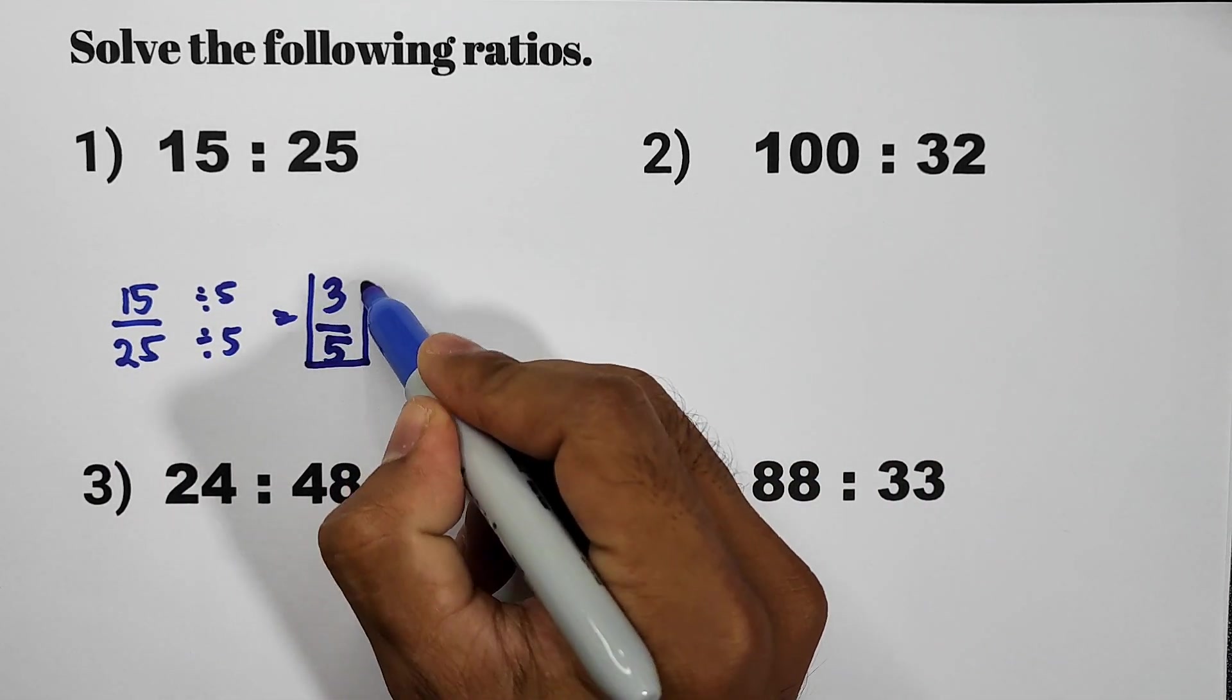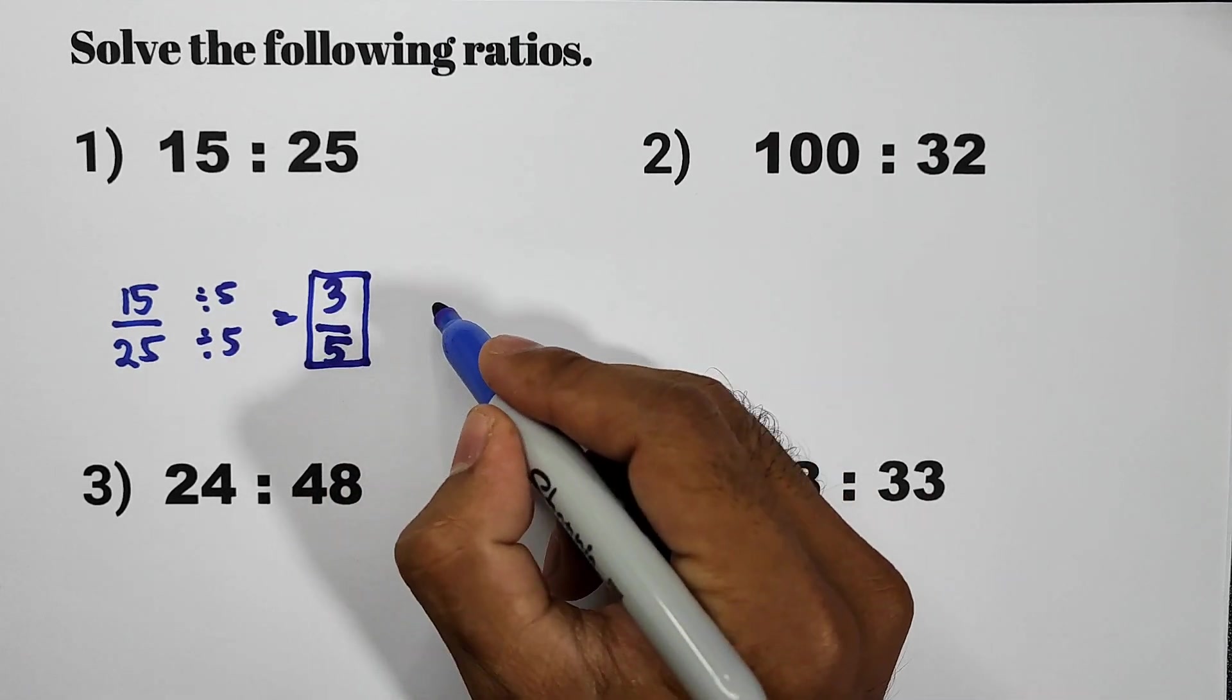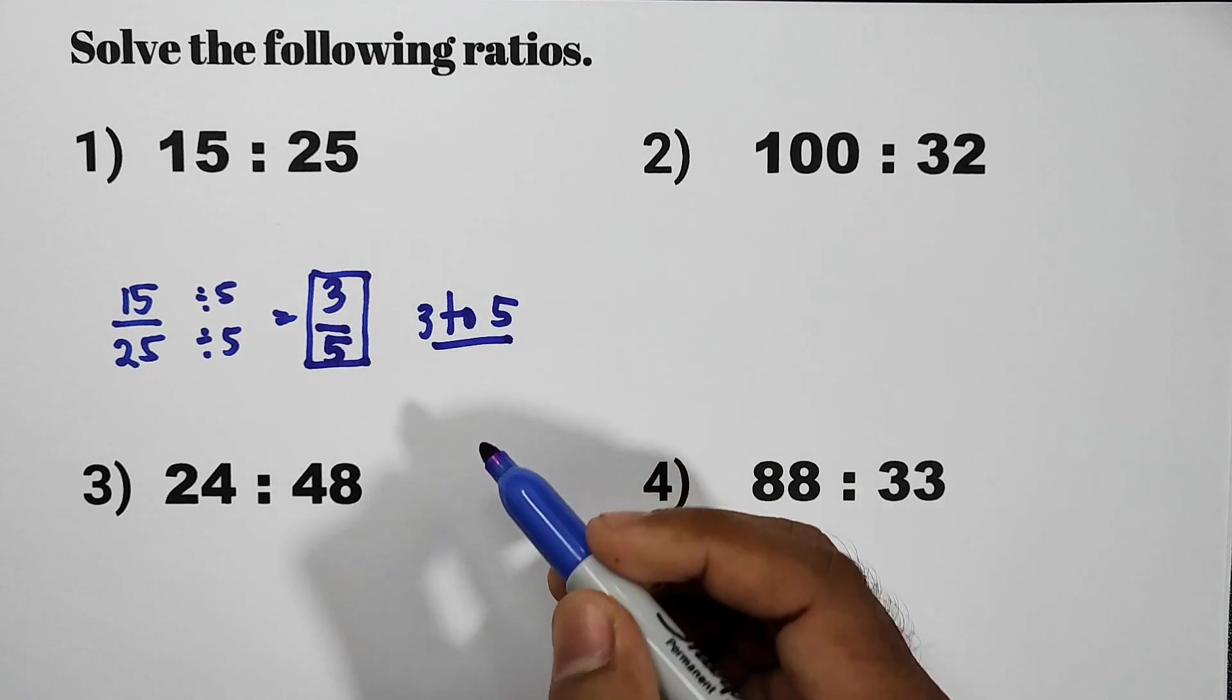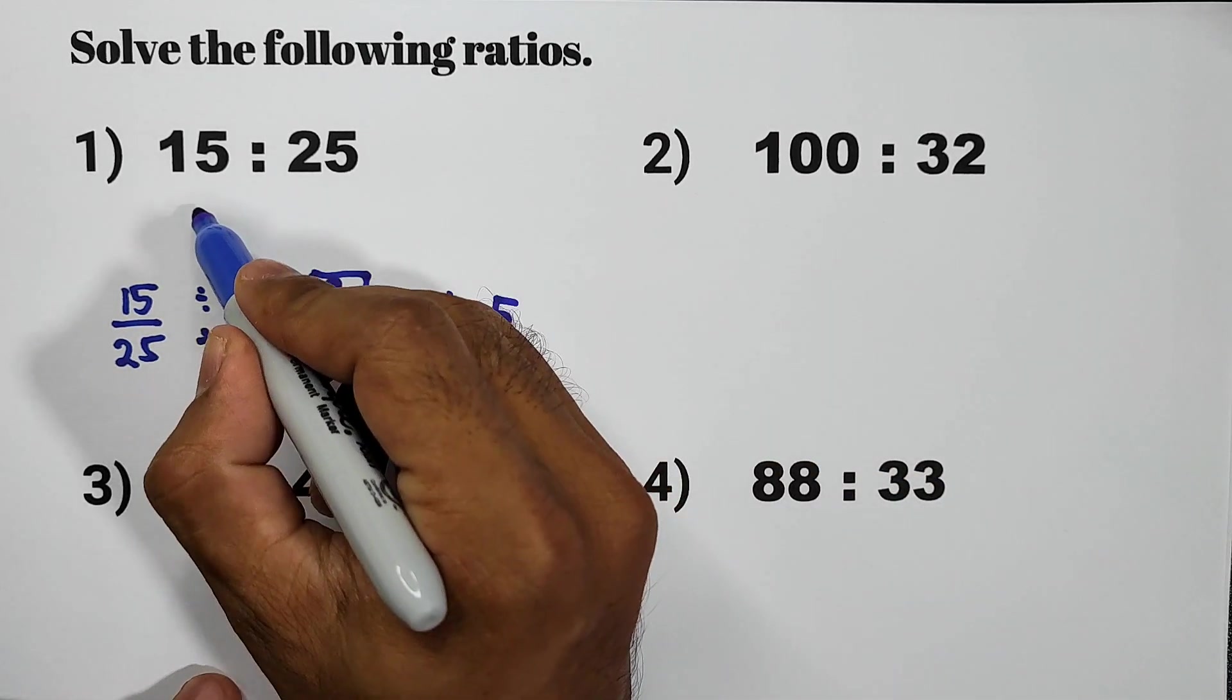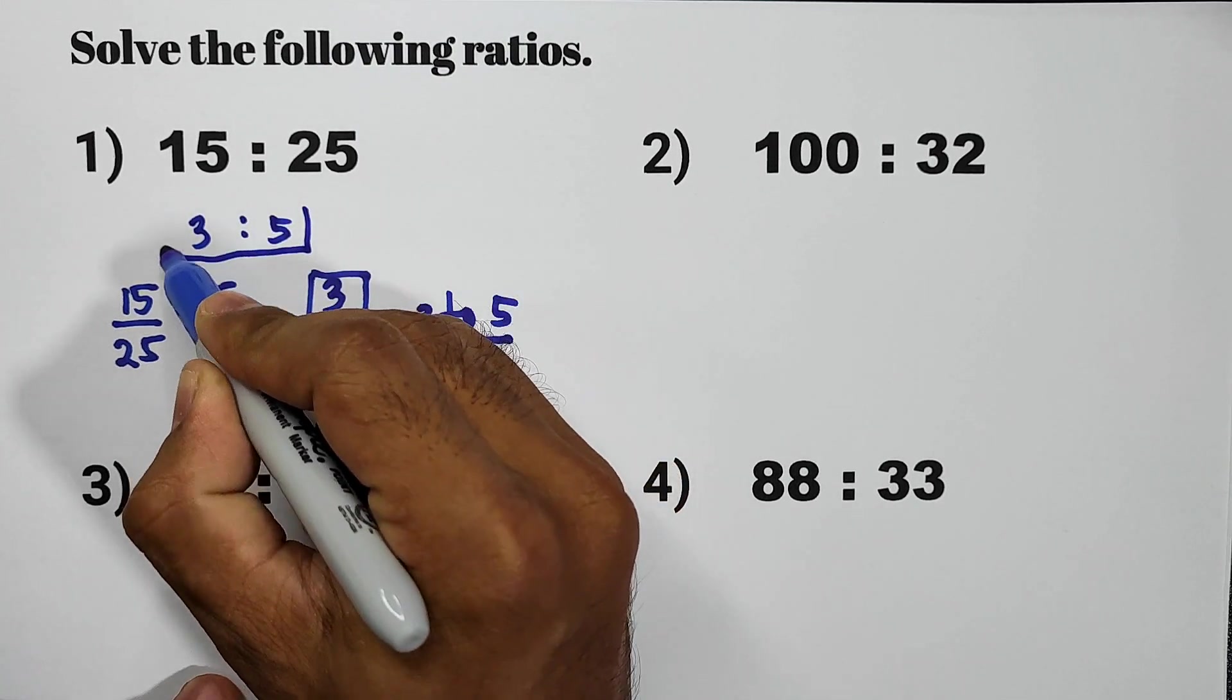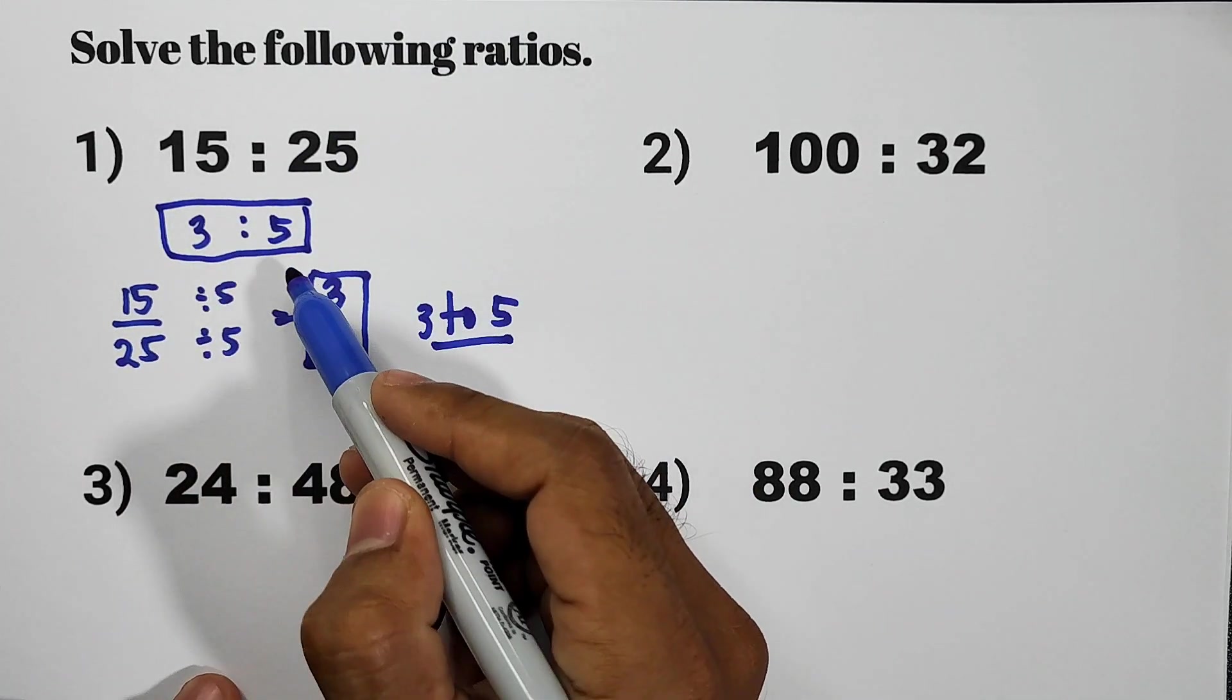So our answer is 3 over 5 or that is 3 to 5 in words. Or in ratio, that is 3 is to 5. Our original form is 3 is to 5.